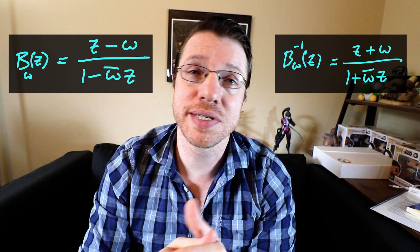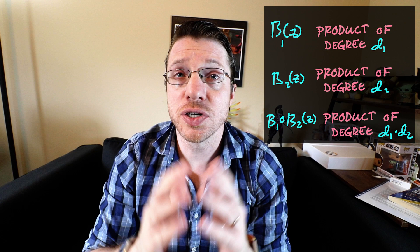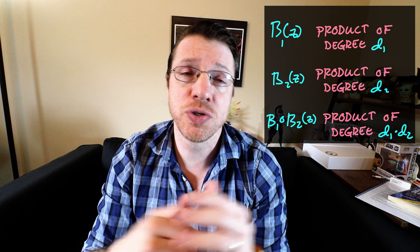Another useful property of Blaschke functions is that their inverse is also a Blaschke function. It also turns out that compositions of Blaschke products are also Blaschke products, and the degree of the composition is the product of the degrees of the individual Blaschke products. If you would like to see these properties proved, you can follow up and read the survey of finite Blaschke products.